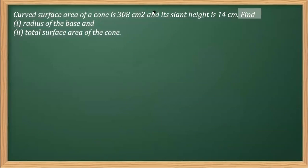For that, we need to draw a figure of a cone. Let's say this is the base, and this is the cone. This is the slant height. We'll be writing the slant height, which is indicated by L, which is 14 cm.